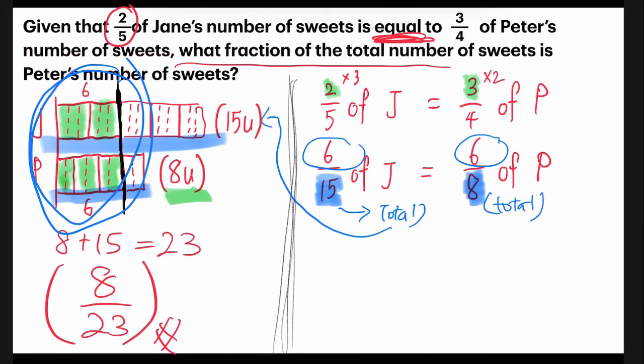Take a look and now you can compare and see the idea. When you change them into the same numerator, what does it mean? Okay, so six, the numerator, is what they have. That's similar. 15 and eight is the total of what Jane and Peter have.